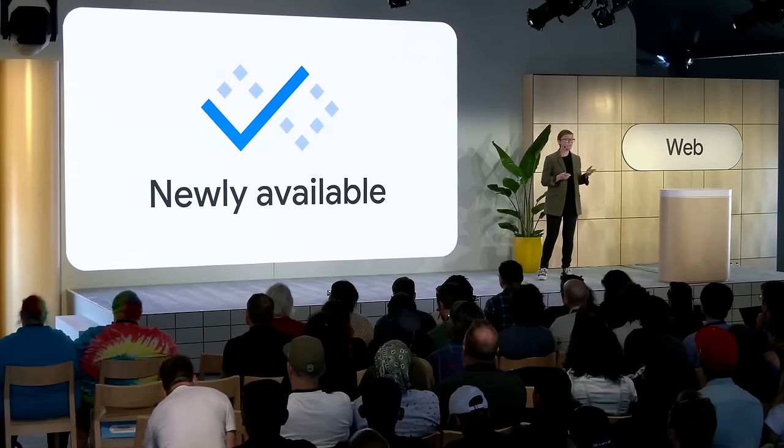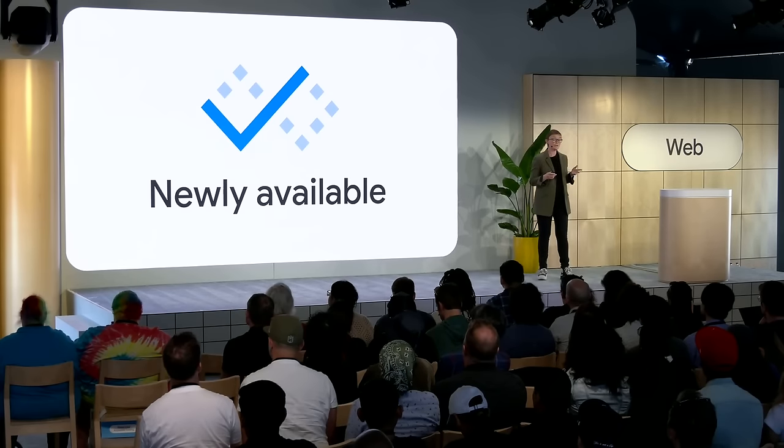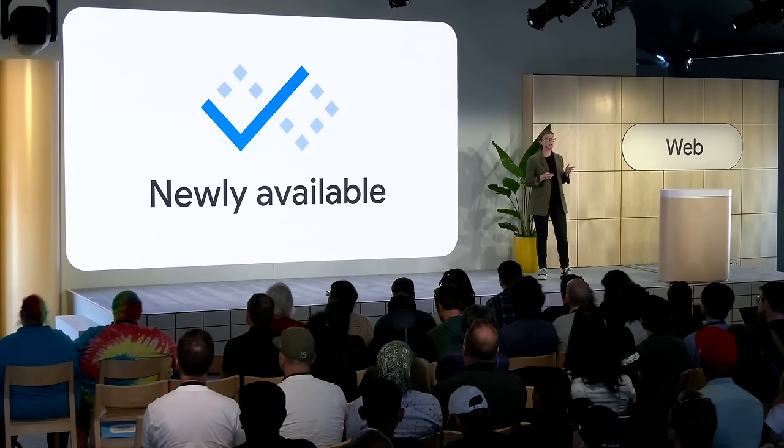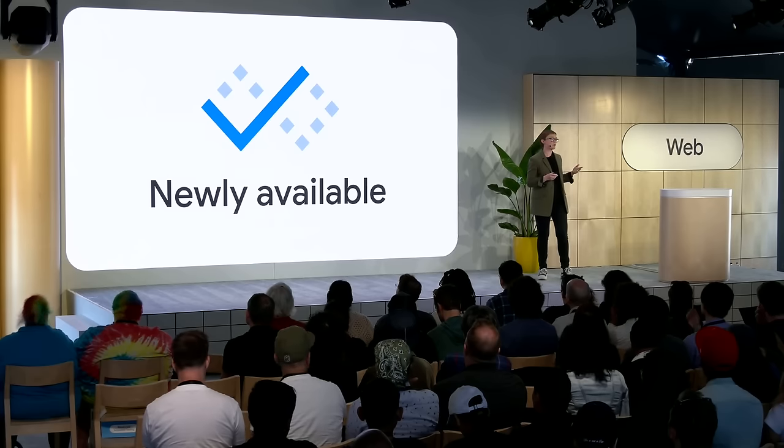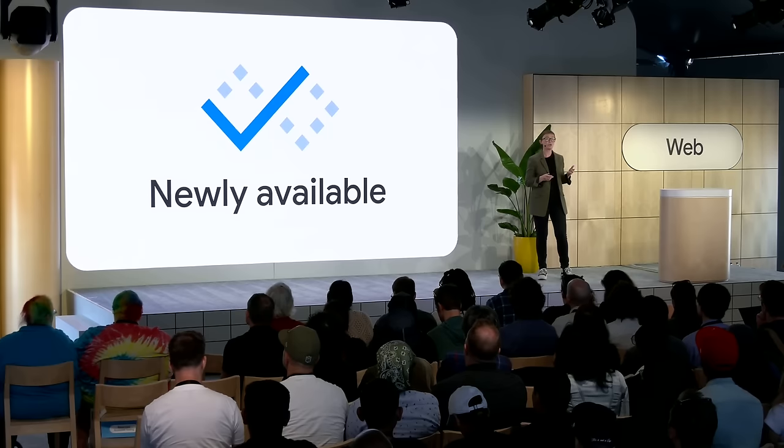When something becomes Baseline newly available, it might just have become available across browsers, perhaps even this week. You know it's there, it works in the same way everywhere, and it's a clear part of the web platform. Some features in that newly available group can be used as an enhancement with a fallback or even a polyfill, but if you're reaching for something newly available, you'll need to put some thought into supporting people who don't have it yet because they've got older browser versions.